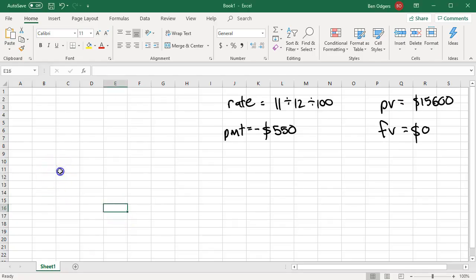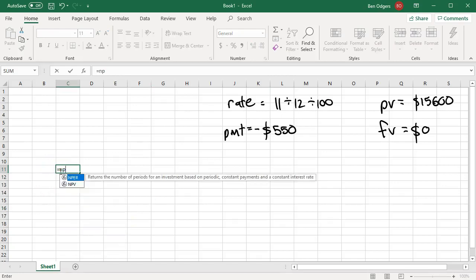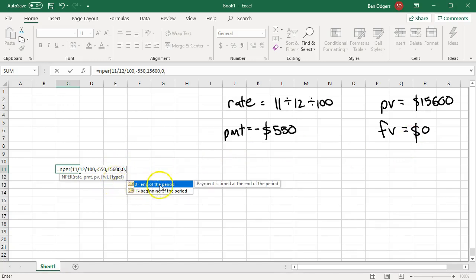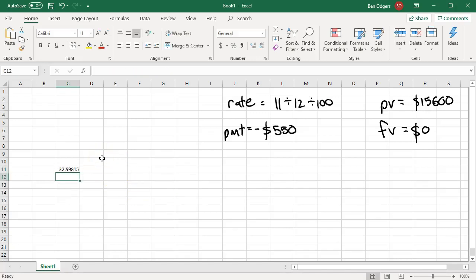We'll go to Microsoft Excel now. We're using the formula equals NPER. I'm using cell C11, but it doesn't matter what cell you use. Open our brackets. The first thing they want is our rate: 11 forward slash 12 and then divide 100, comma. Next, our repayment, which is negative $550, comma. Next, our present value, which is $15,600, comma. Our future value is zero, comma. Our type is zero—it's at the end of the period. Close our bracket, enter, and we get almost 33. Let's round it up to 33.